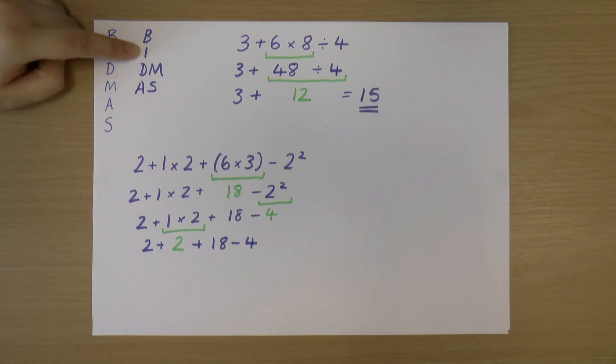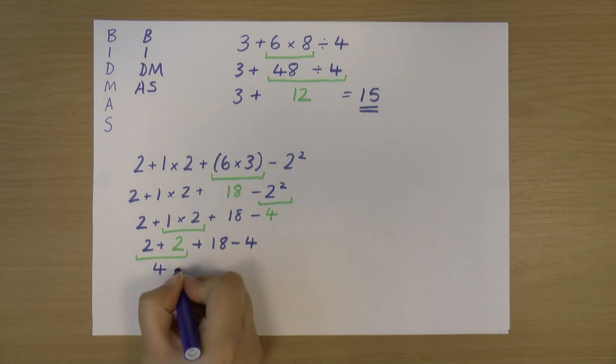Great. Brackets? No. Indices? No. Divisions, multiplications? No, I've done all those. Do I have any additions or subtractions? Yes, I do. I actually have three. So I'm going to work left to right because additions and subtractions have that equal priority. So I'm going to work starting on the left. I'm going to start with this one: 2 + 2, which is 4. Rewrite the sum. Now I've got on the left 4 + 18, which is 22. Rewrite the sum. And now I've got something that I can just solve. So I've got 22 - 4, which gives me my answer of 18.